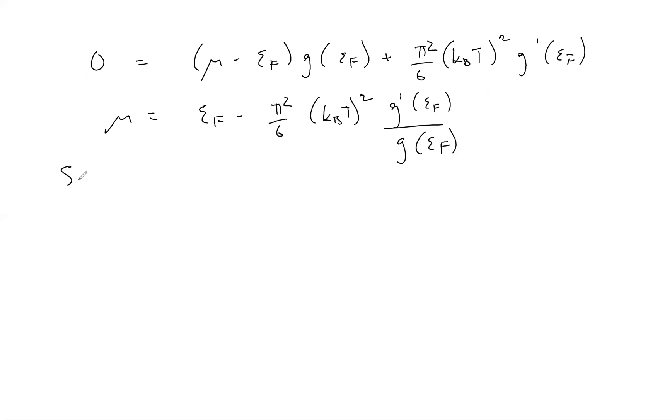We can substitute our earlier result for the density of states. We can substitute in the explicit value and simplify the expression for mu even further. We find that it equals the Fermi energy times one minus a third of pi squared, times kB T over twice the Fermi energy, squared.